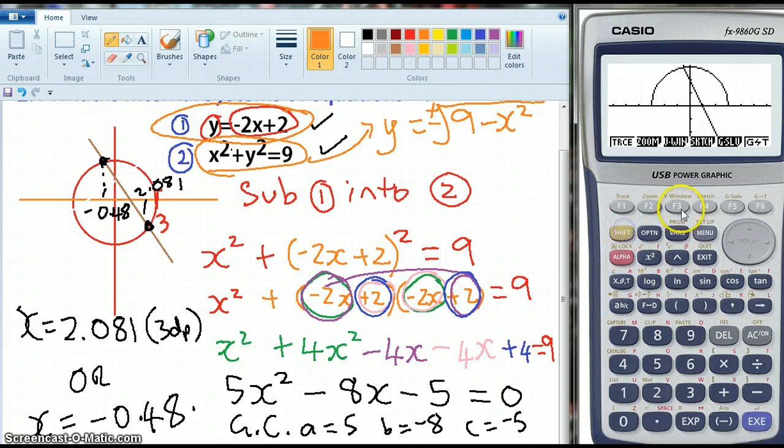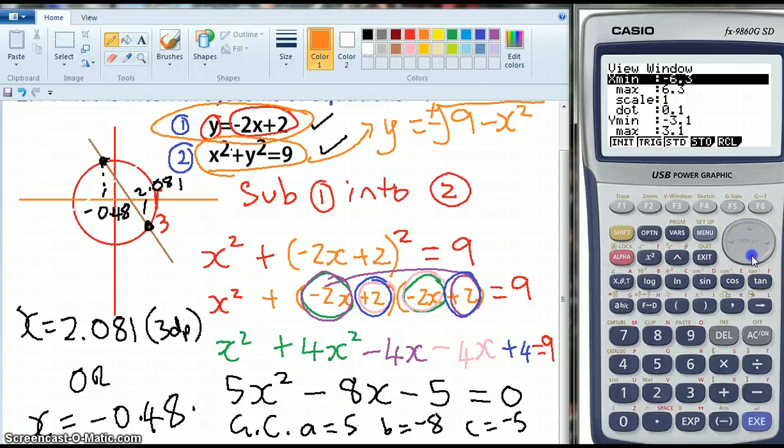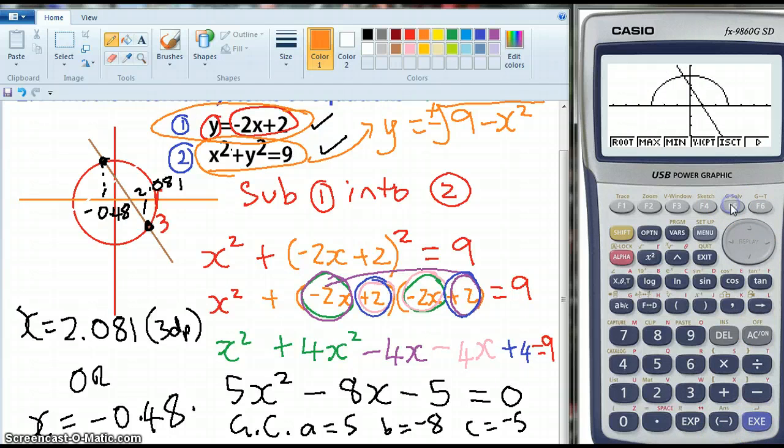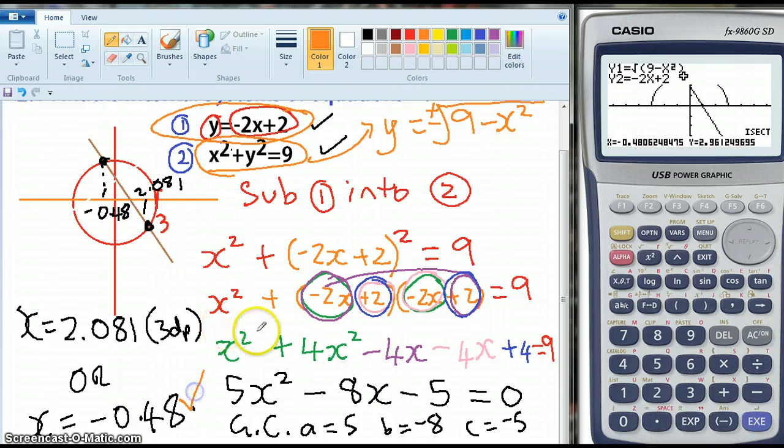Now I could go shift view window and decide that my y maximum, I might be better to have negative 4 and 4 just so that I can sort of see it a little bit better. I'm going to go gsolve intersection and so here I've got the negative 0.48 so that one was correct and the y value for this coordinate is 2.96 so I might as well try and pop that point on my very busy screen. So I've got negative 0.48 comma 2.96 so that is this point here.